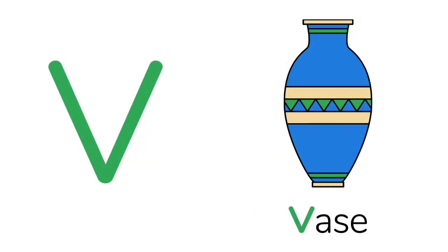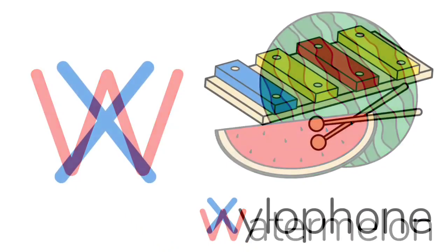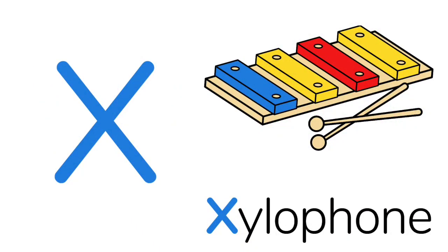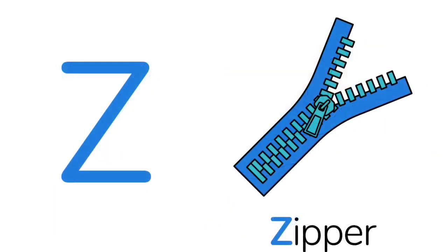V for vase, W for watermelon, X for xylophone, Y for yoyo, Z for zipper.